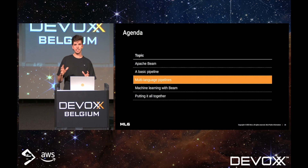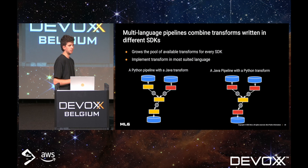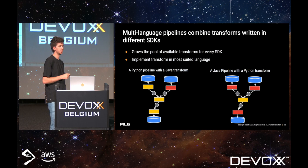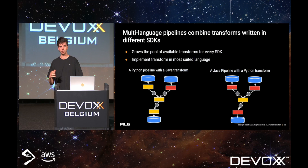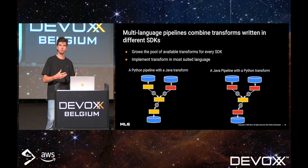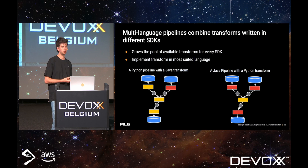Now we have an idea of what a basic pipeline looks like. Let's take a deeper look into multi-language pipelines. A multi-language pipeline is a pipeline that combines transforms written in different SDKs. This is very useful because it grows the pool of available transforms across all languages — if you have a transform in one language, you can reuse it in another, which is good for availability but also for maintenance. You only need to maintain one version, which prevents feature drift between different languages. You can also implement every transform in the most suitable language — for a database connection that might be Java, for a machine learning model that might be Python.